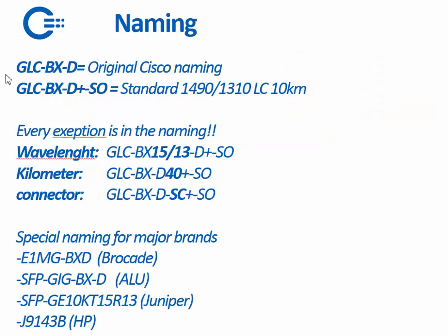The naming for Solid Optics: we always start with the original name, like the GLC-BXD, and add plus or minus SO for Solid Optics to make a distinction that it's our optic. Every exception is put in the name. So the GLC-BXD is 1490-1310, LC connector, 10 kilometers by default. If it's a different wavelength, we add that to the name. If it's 40 kilometers instead of 10, we add the 40. If it's an SC connector instead of LC, we add that as well — and combinations are also possible.